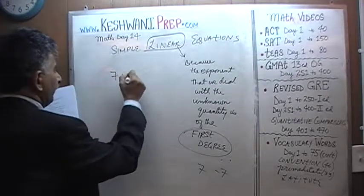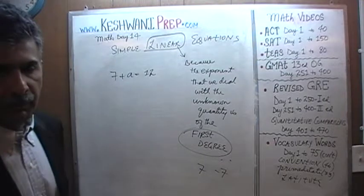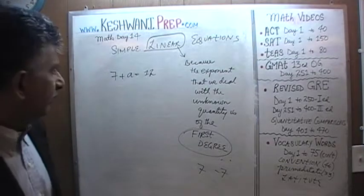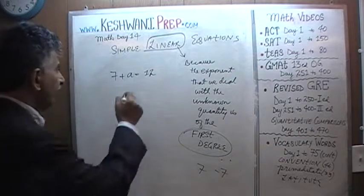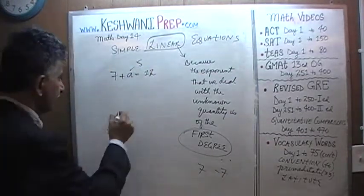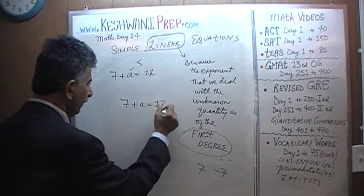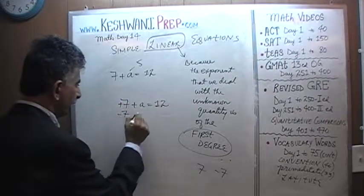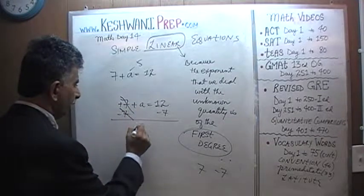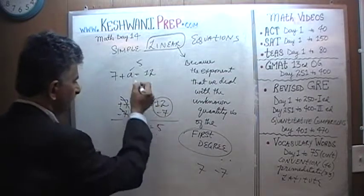Next: 7 plus a equals 12. We can immediately tell that 7 plus 5 equals 12. We subtract 7 from both sides of the equation. 7 drops out and a equals 12 minus 7, which is 5 — just like before.